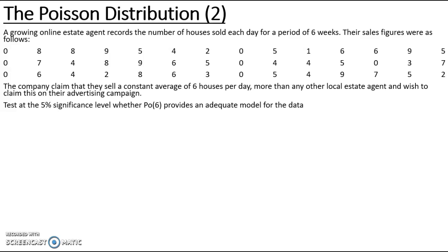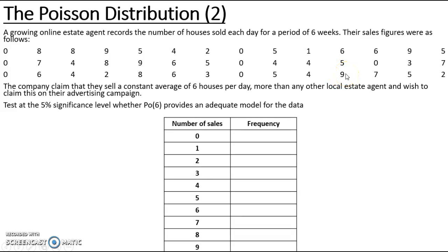Looking at the information given about the number of houses sold per day, the fewest number sold per day is 0 and the biggest number of houses sold on one single day is 9. So I am going to draw my frequency table to include that information from 0 to 9.